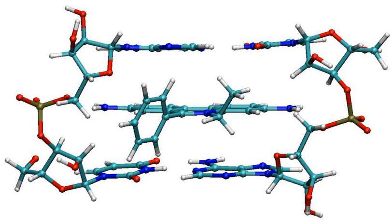Other metallic cations that have been used include rhodium(III) and iridium(III). Typical ligands attached to the metal ion are dipyridine and terpyridine, whose planar structure is ideal for intercalation.